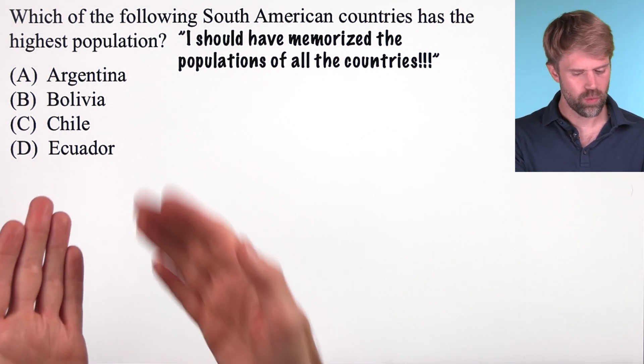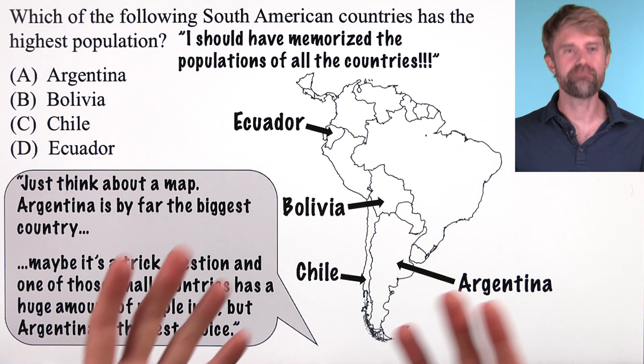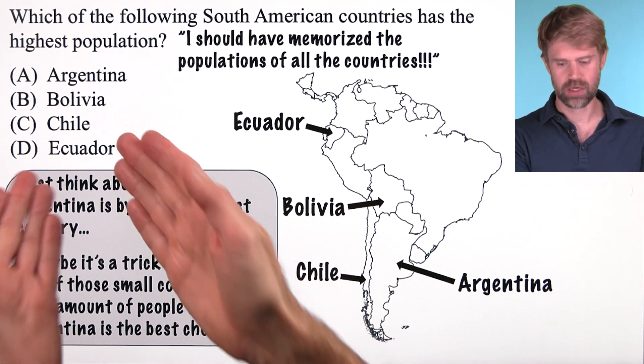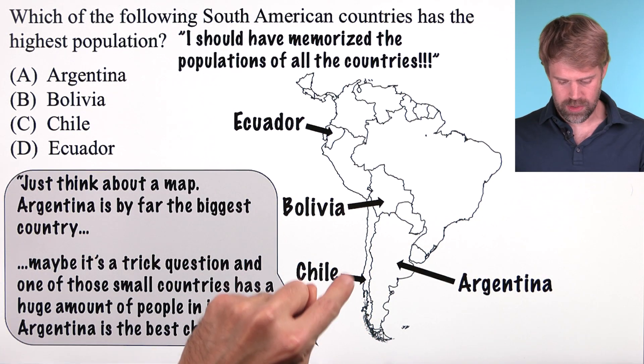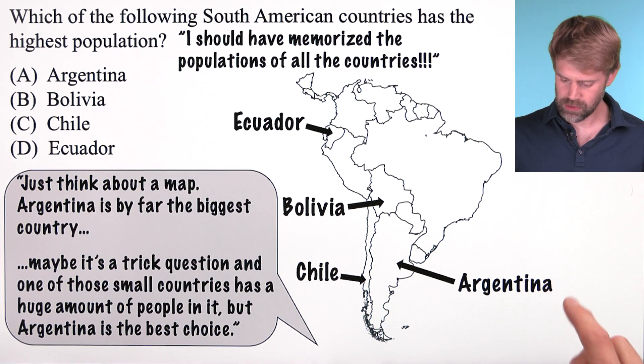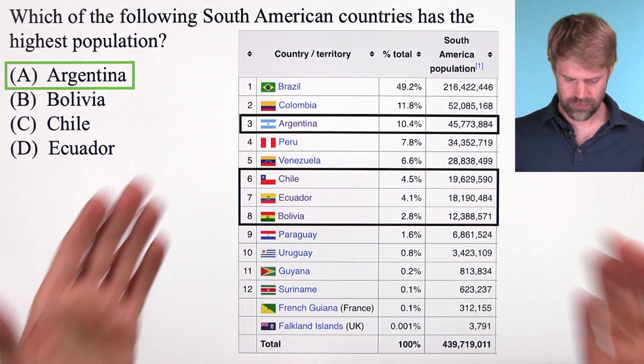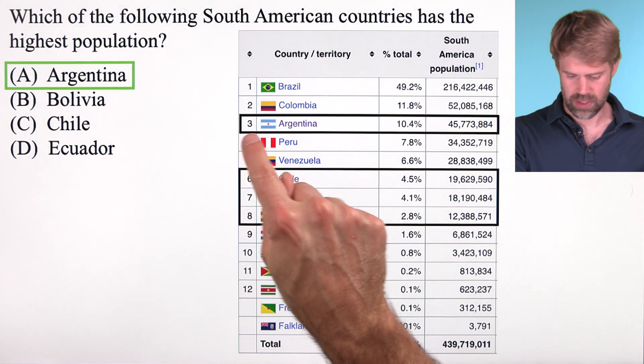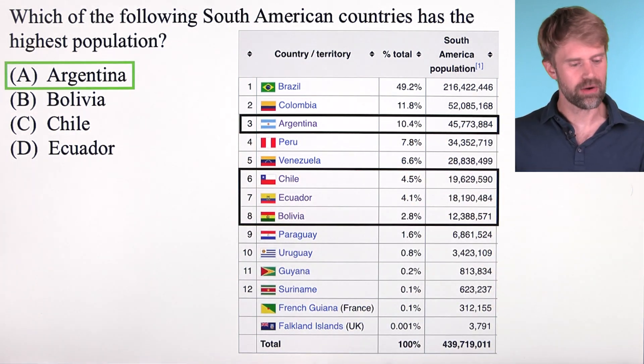Well, my dad took one look at the question and he said, just think about a map. Argentina is by far the biggest country. Now look, maybe it's a trick question and one of these small countries has a huge amount of people in it, but generally Argentina is going to be your best choice here. And sure enough, if you look up the populations of the South American countries, you'll see Argentina is right up here and the others are down here.